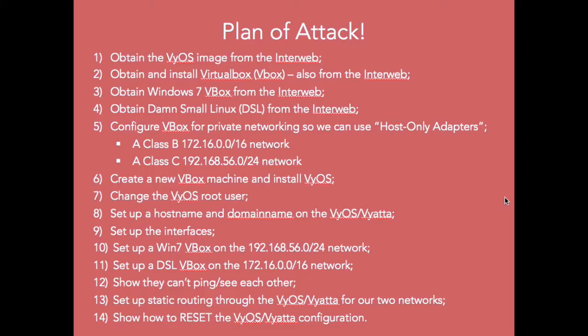We're going to show, perfectly naturally, that they can't ping each other because there's no routing. Then we're going to go back onto our VyOS and set up static routes for those two networks, and then show how you can ping those machines because our VyOS will be acting as our router. That will summarize how you can install and configure a VyOS machine to be your router. Then we'll start to build on that in subsequent videos to show how you can use VyOS within IBM software to set up a huge network on the IBM infrastructure.